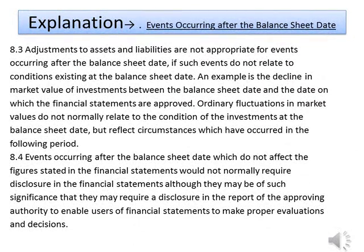Paras 8.3: Adjustments to assets and liabilities are not appropriate for events occurring after the balance sheet date if such events do not relate to conditions existing at the balance sheet date. An example is the decline in market value of investments between the balance sheet date and the date on which the financial statements are approved. Ordinary fluctuations in market values do not normally relate to the condition of the investments at the balance sheet date but reflect circumstances which have occurred in the following period.